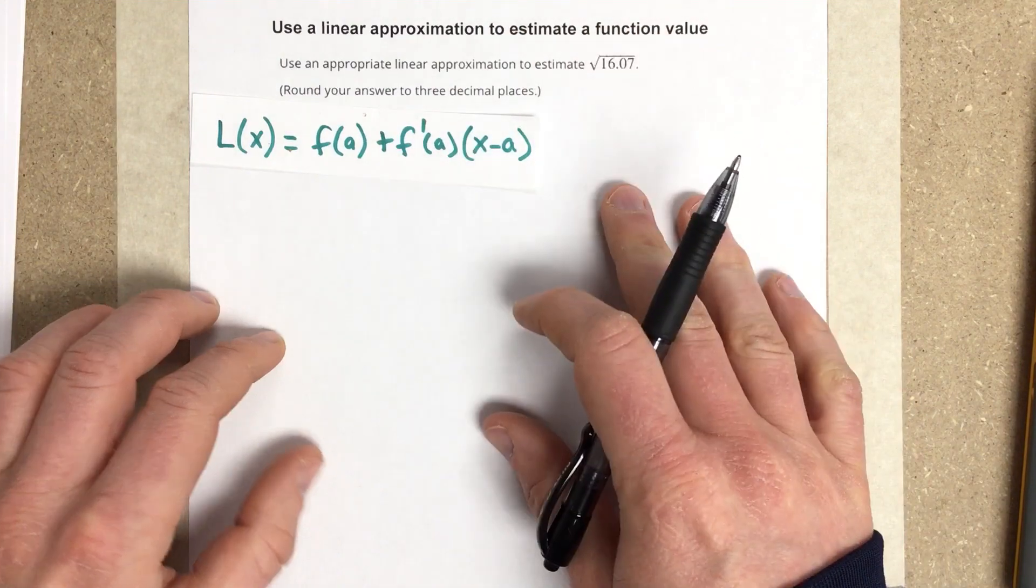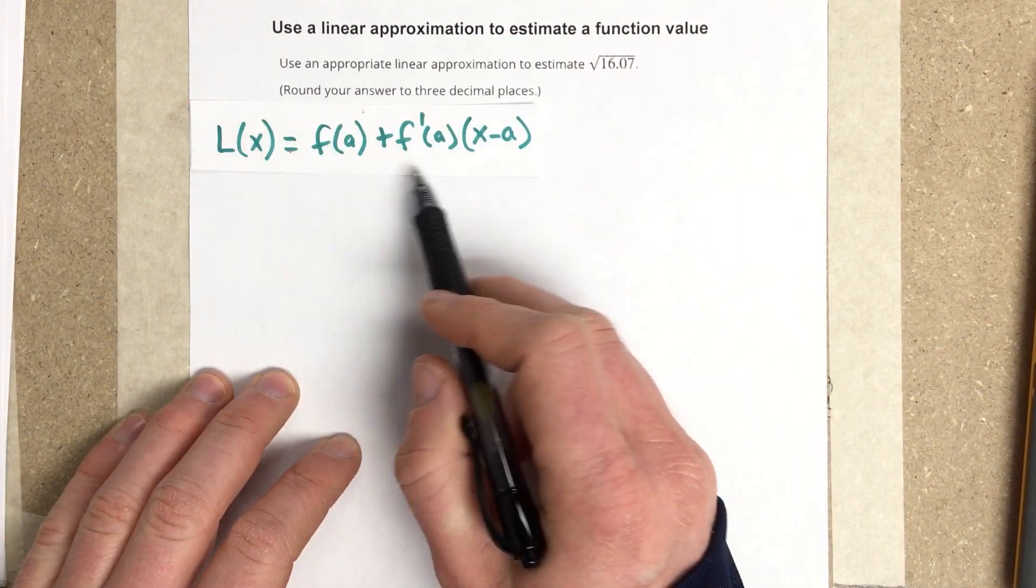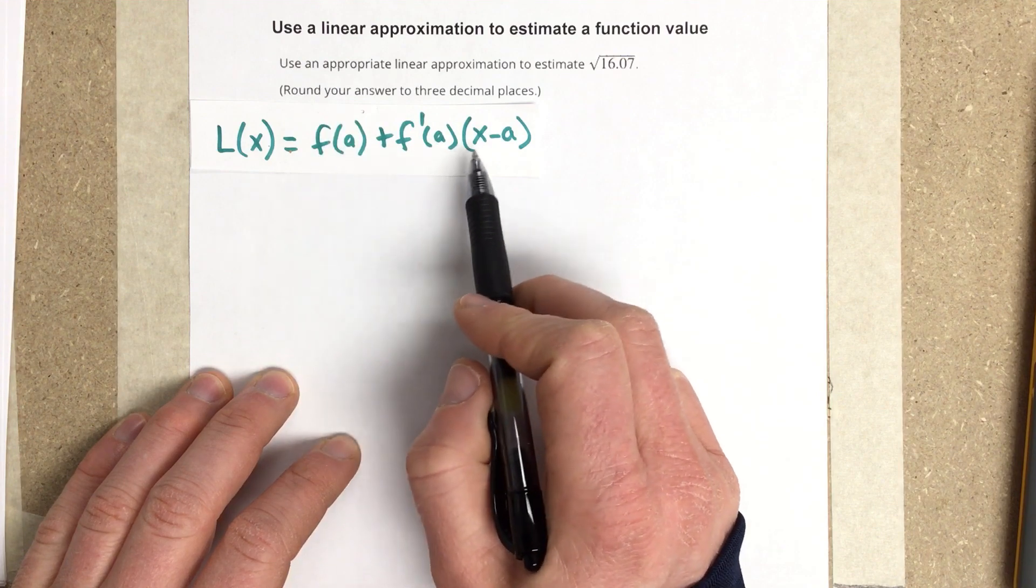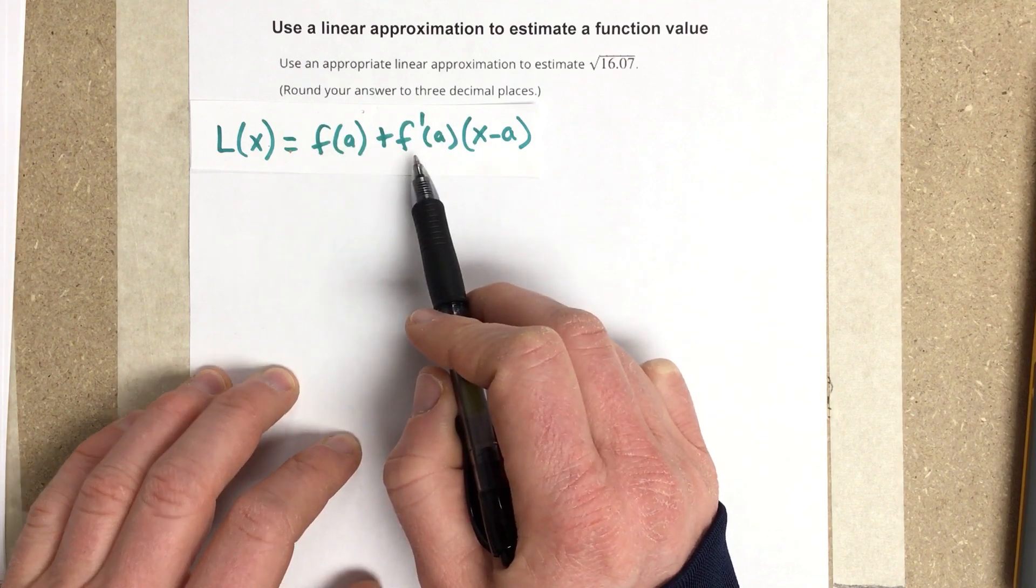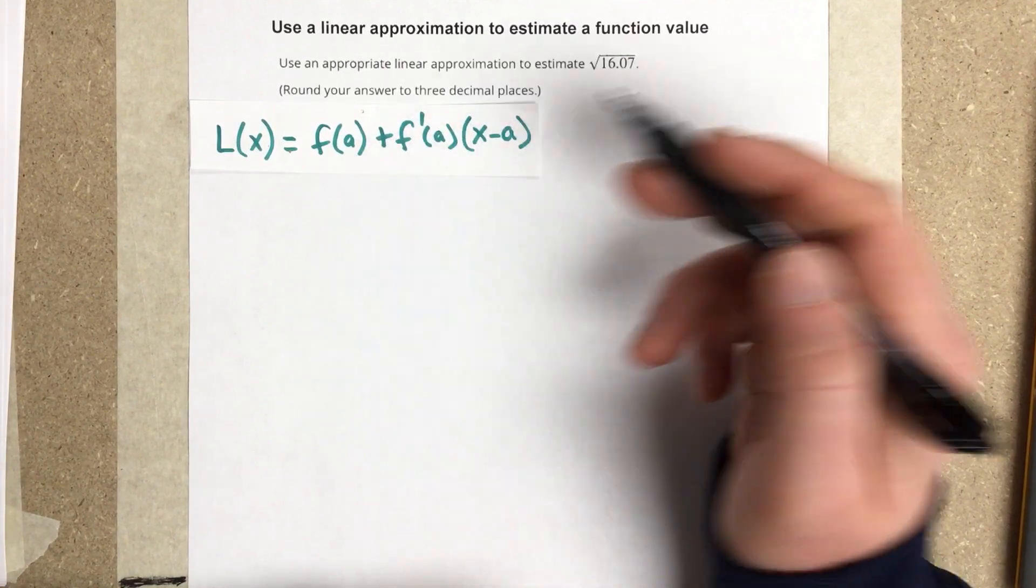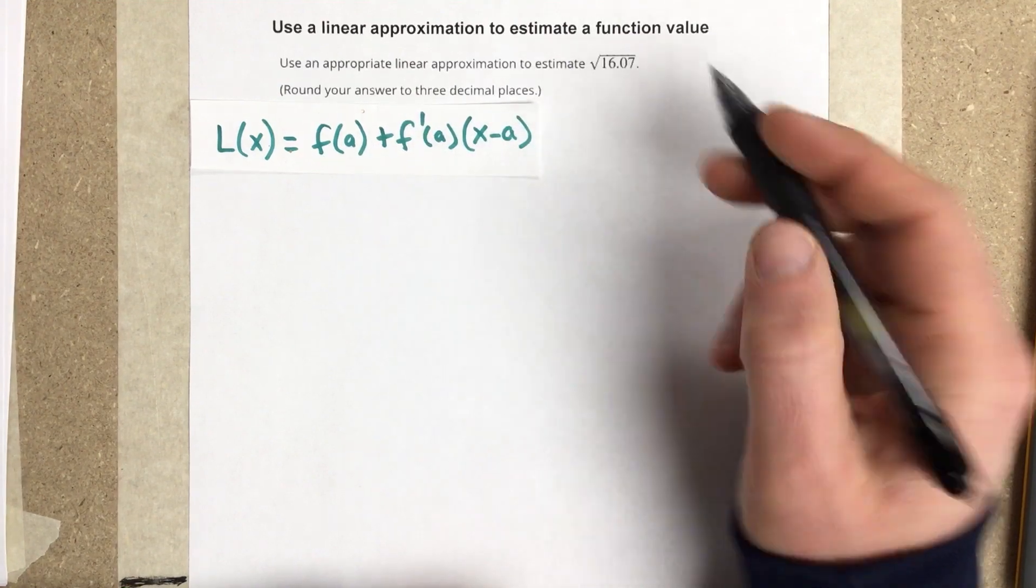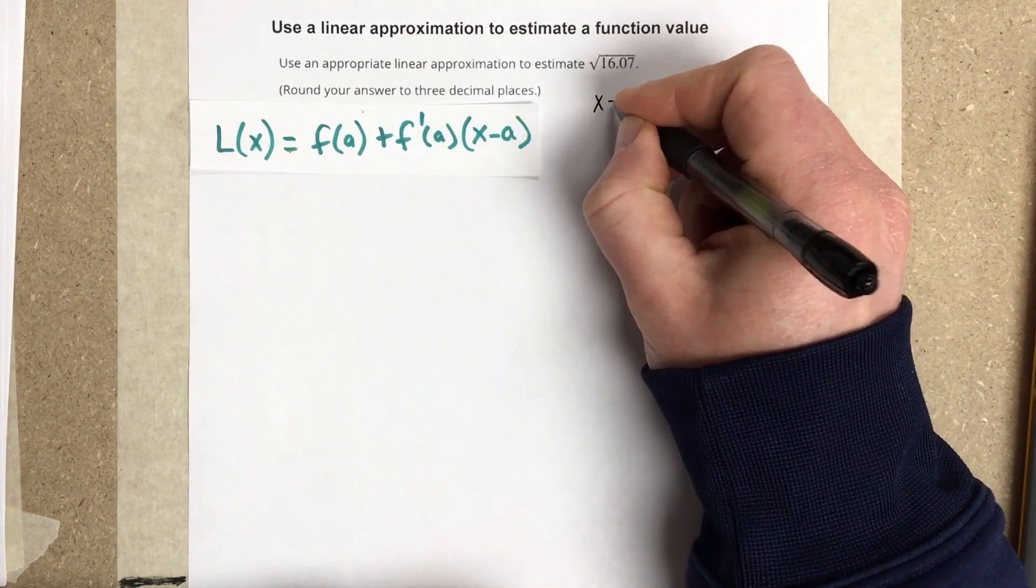So I'm going to write down what the linearization formula is. Remember, this is just an equation for basically the tangent line of any equation at a specific point. So what we need to do is we need to write down that, first of all, our x value is 16.07.